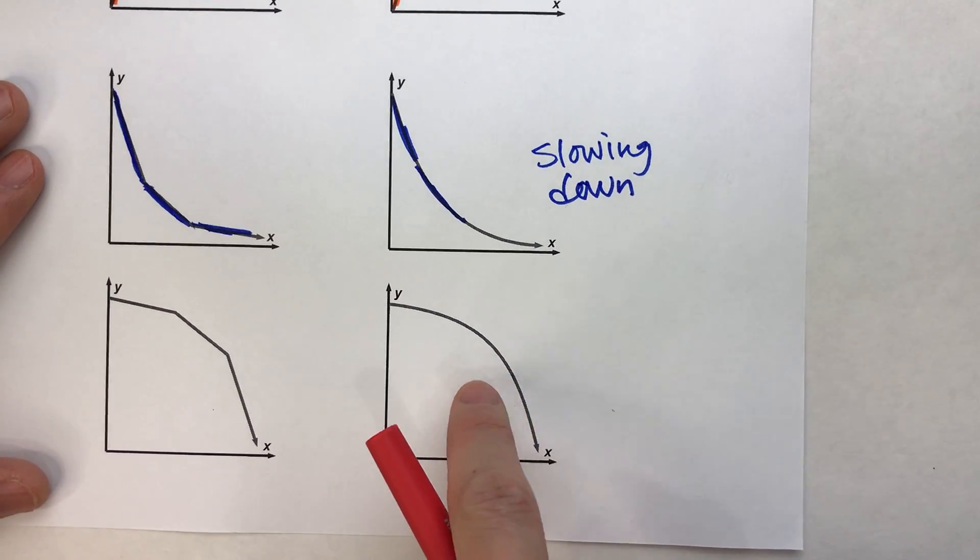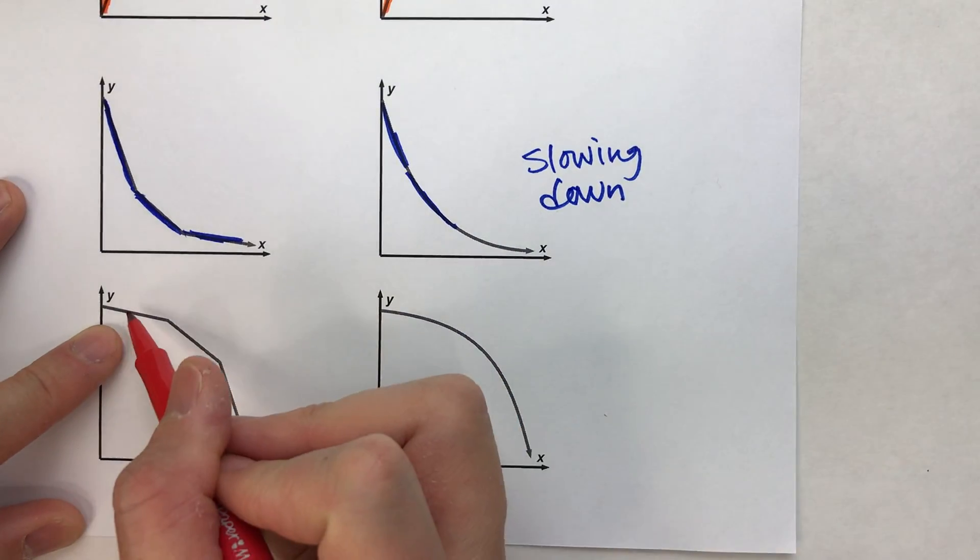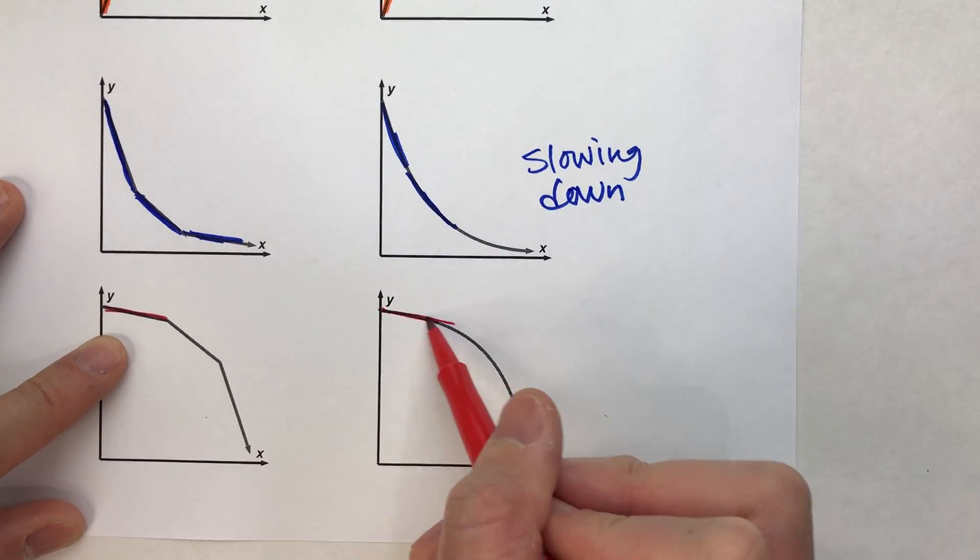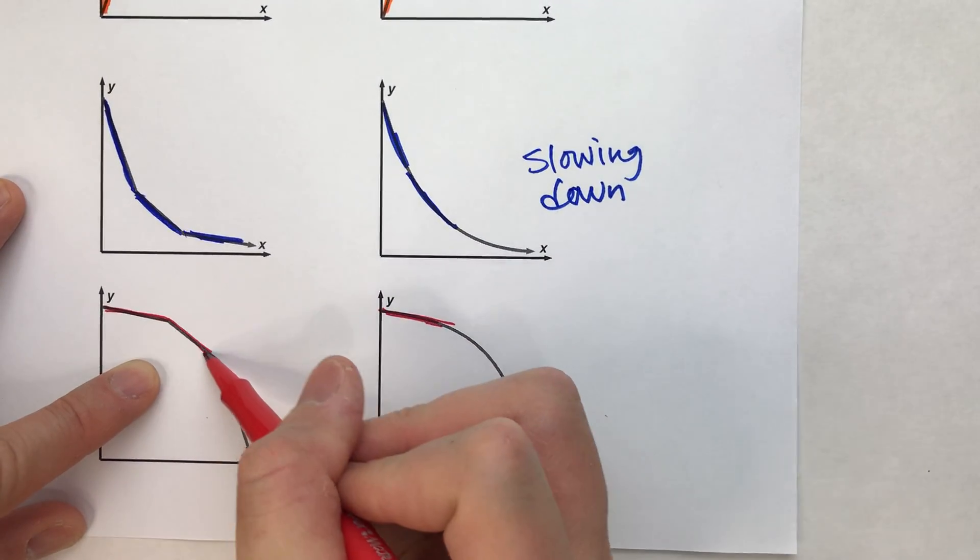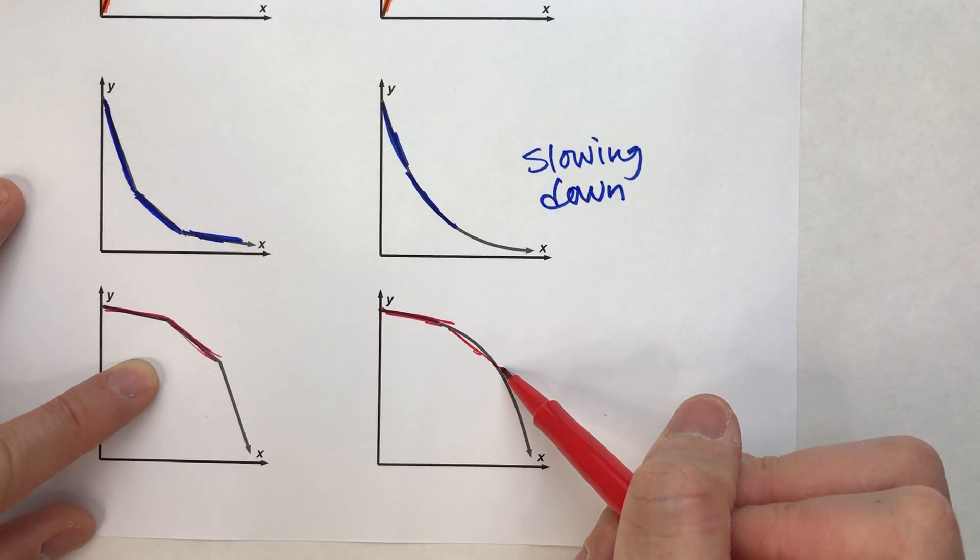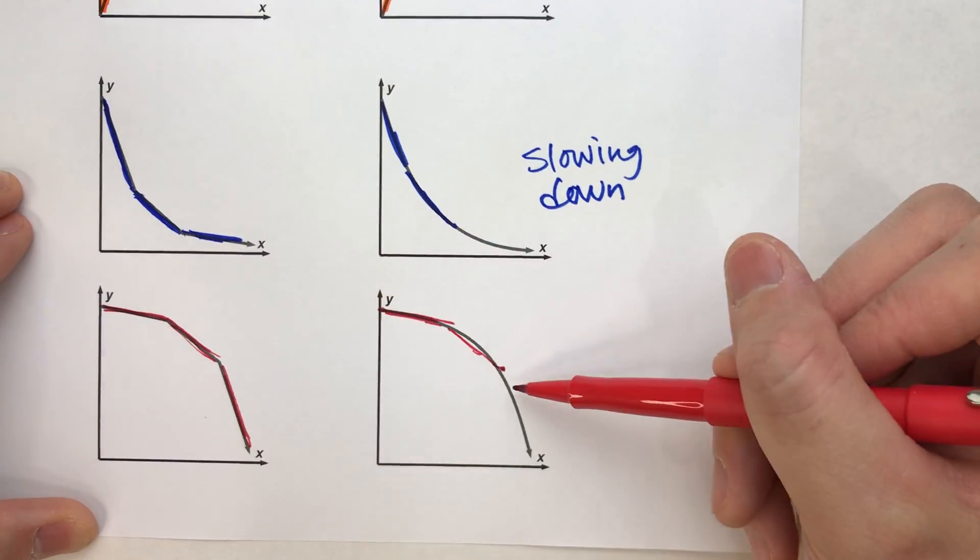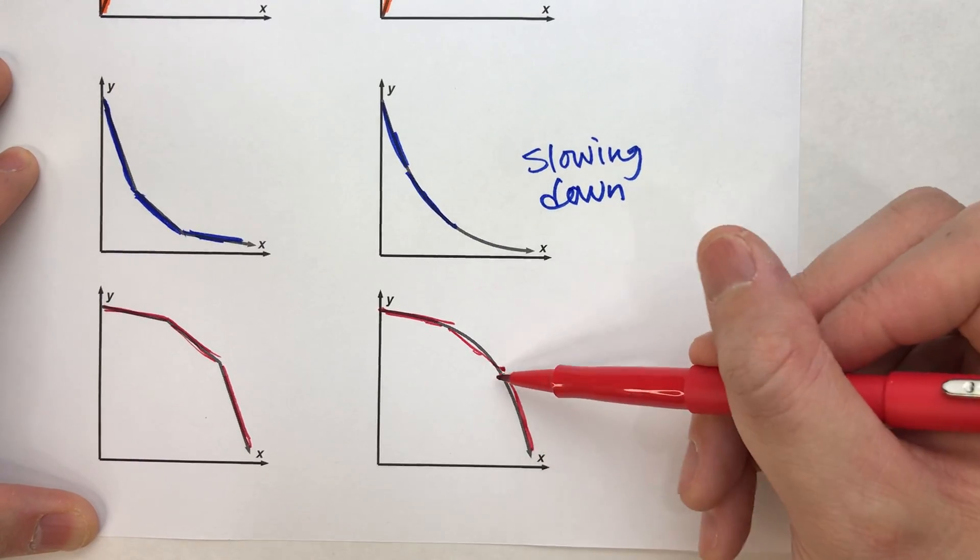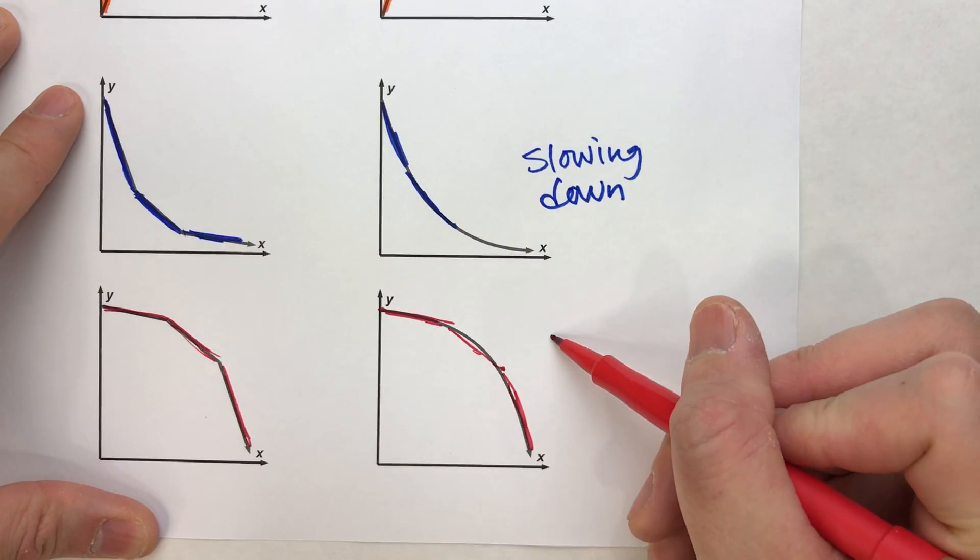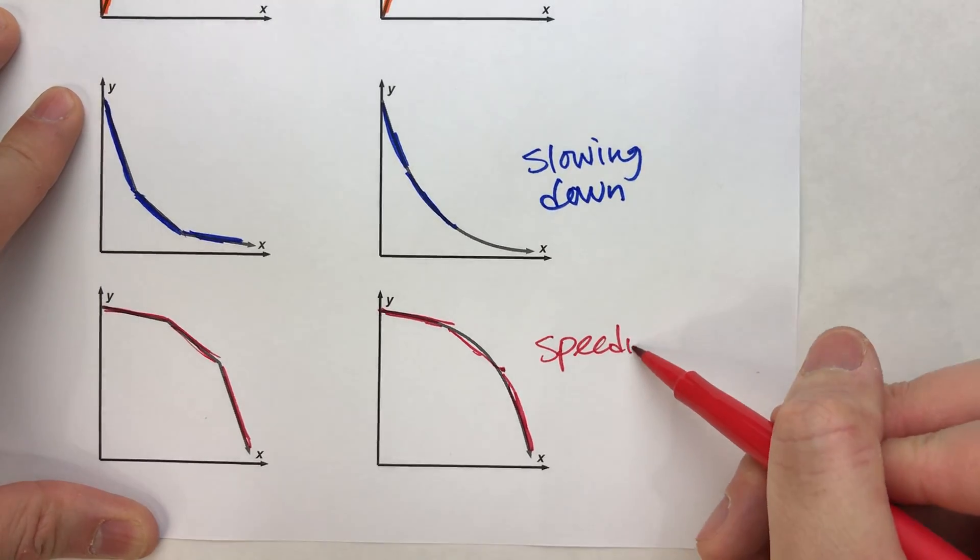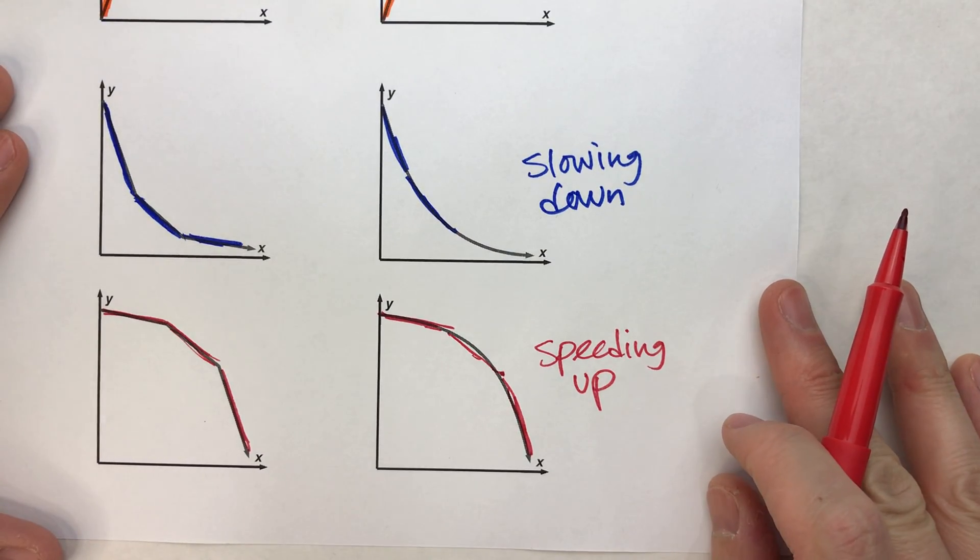Whereas this one over here, notice this one starts out kind of flat, starts out kind of flat. So it's decreasing kind of slowly. Then it gets a little bit steeper. So it's getting faster. And then by the end, it's going pretty quickly down. It's pretty steep going down. So this one's decreasing but it's speeding up the rate of decrease.